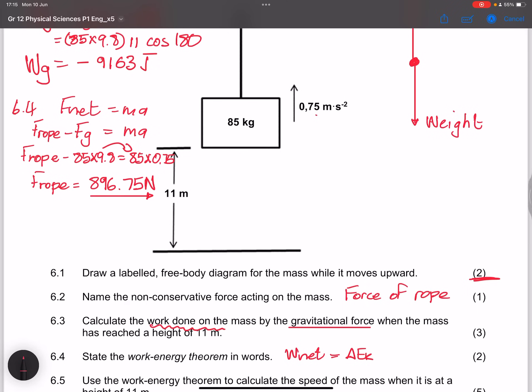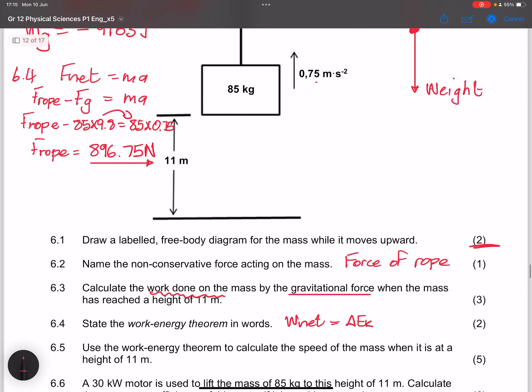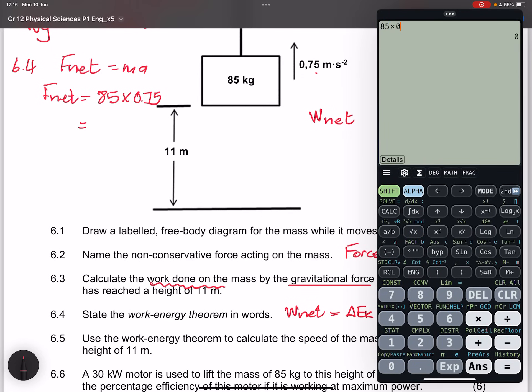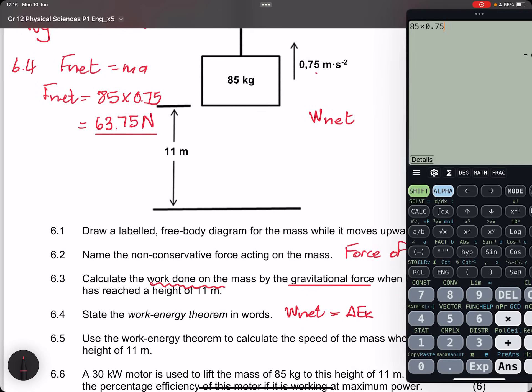That's the force that the rope exerts on this body, right? But we are looking for the speed when it's at 11 meters. And in fact we didn't even need to find the force on the rope. We could have just said F net is equal to ma, and what is our F net? Our net force is 85 times 0.75, so that would be 85 times 0.75, that gives us 63.75 newtons. That would be the net force.